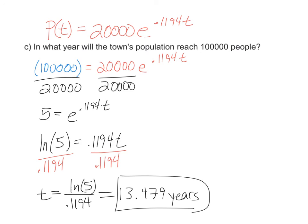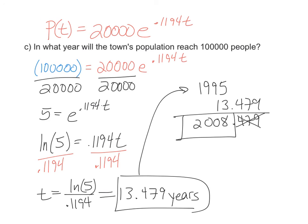That's how many years after 1995 the population will reach 100,000 people. We need to add 1995 and 13.479, and we get 2008.479. When you get an answer like this for years, the decimal doesn't mean anything. This population will reach 100,000 people in the year 2008.